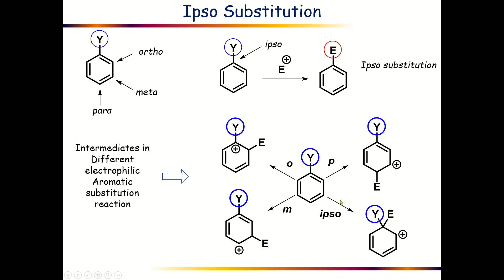In case of ipso substitution reaction, the electrophile will be directly attached with this ipso carbon atom, which is also directly attached with Y, so the positive charge must be over the ortho carbon atom. As you can see, these four are totally different carbocations involved in four different types of electrophilic aromatic substitution reactions, and these carbocations will be stabilized through resonance or conjugation.